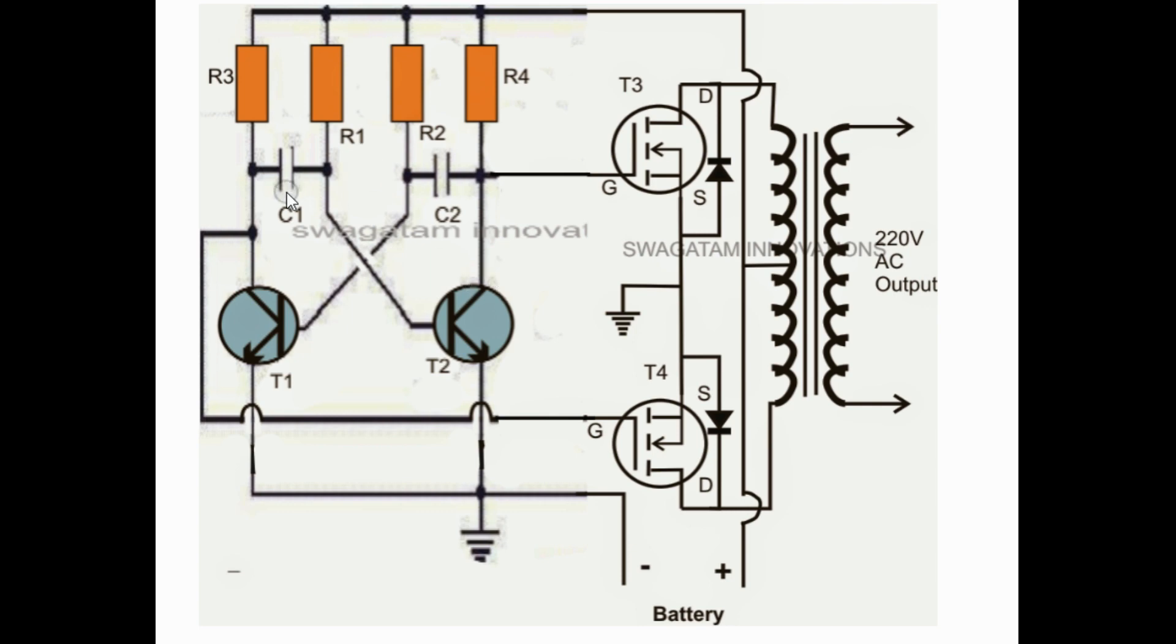So here C1 and C2, you should use 2.2 microfarads for both of them.